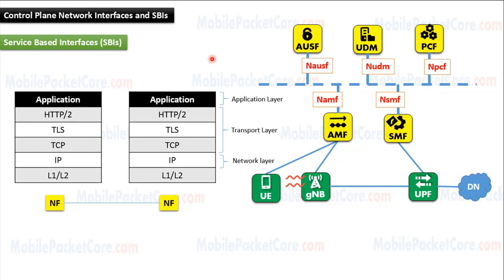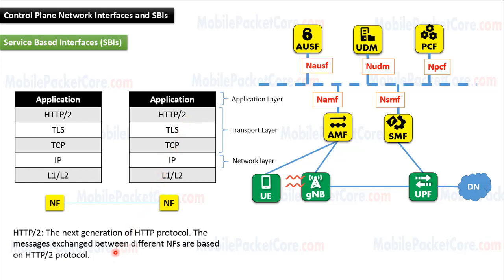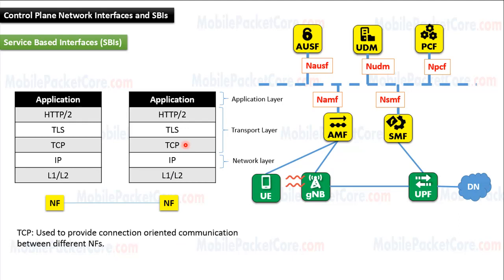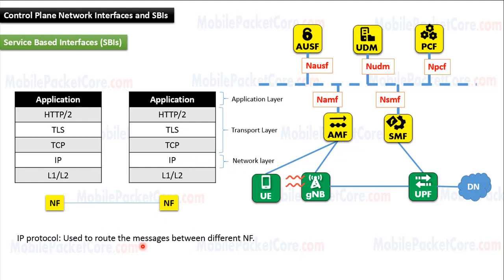The protocol stack of all service-based interfaces is the same. This graph shows the protocol stack of all service-based interfaces. The application layer contains the messages exchanged between different network functions. The transport layer contains HTTP2 protocol, TLS protocol, and TCP protocol. HTTP2 is the next generation of HTTP protocol, and messages between network functions are based on it. TLS protocol is used for security — it protects messages from being hacked or altered during transmission. TCP protocol provides connection-oriented communication between network functions. In the network layer, the IP protocol is used to route messages between different network functions.